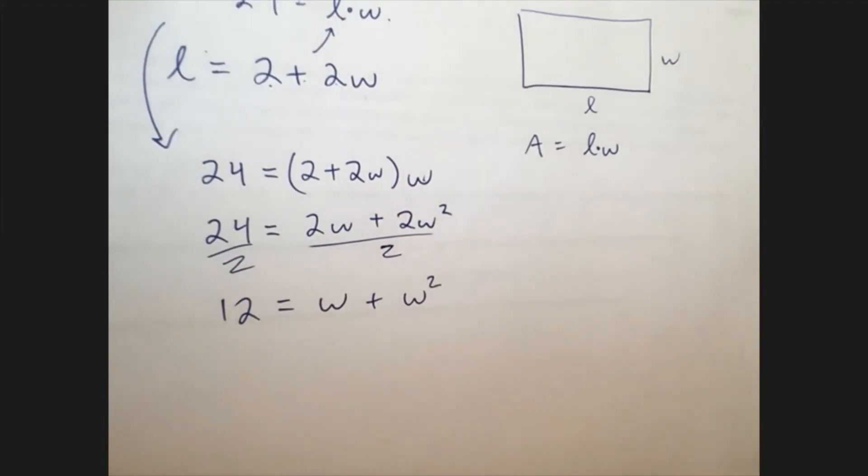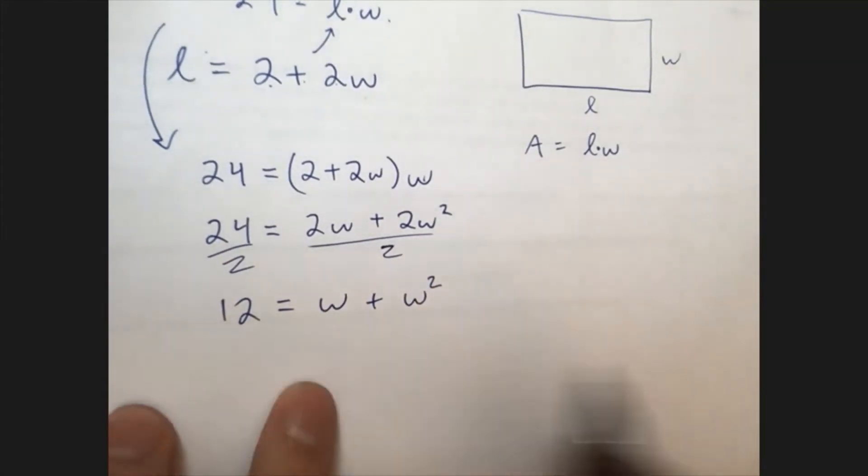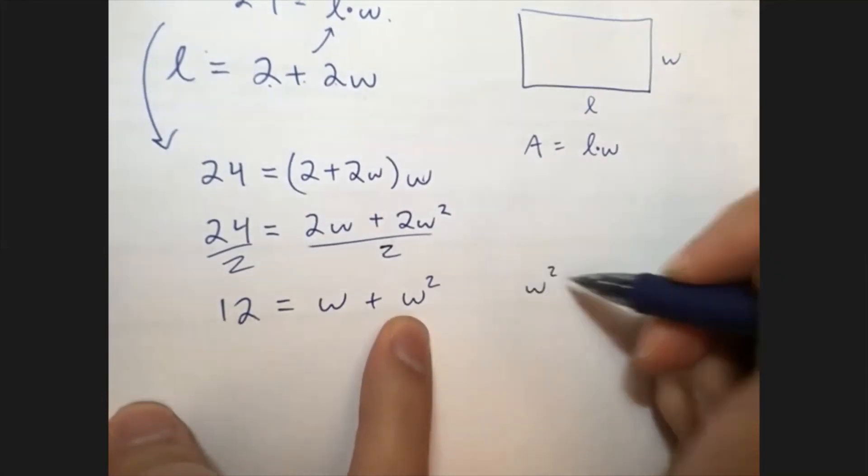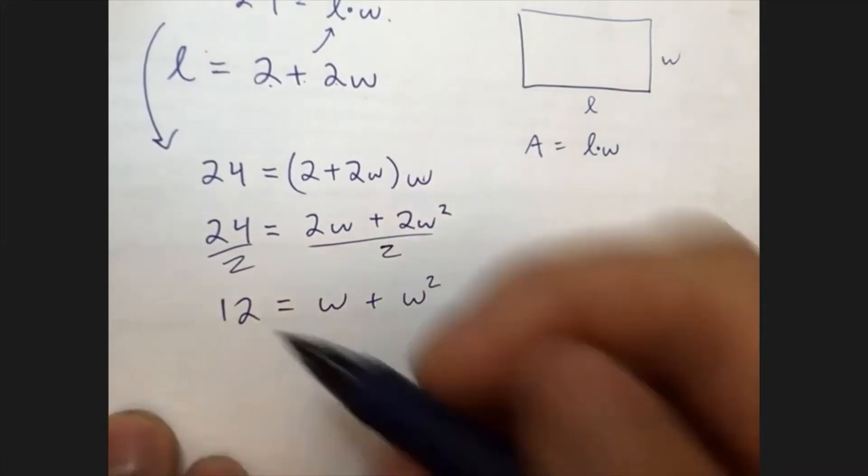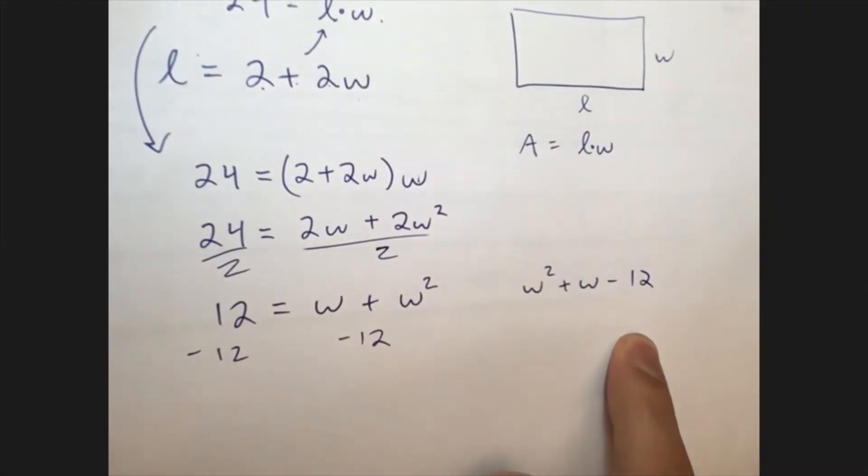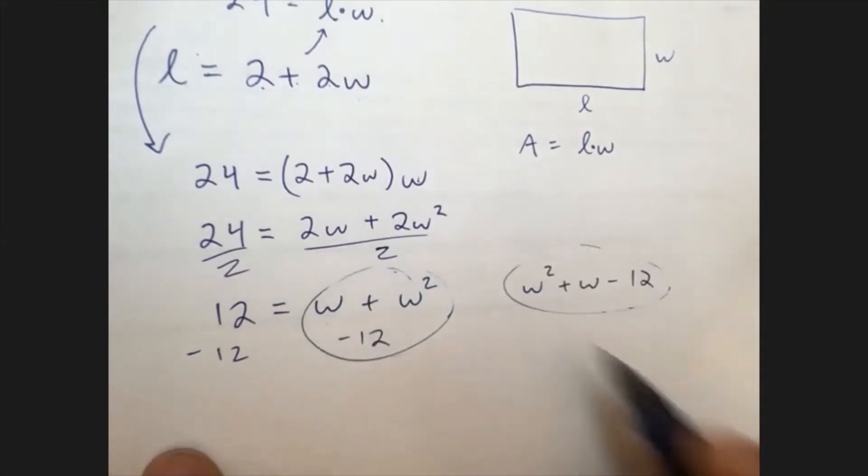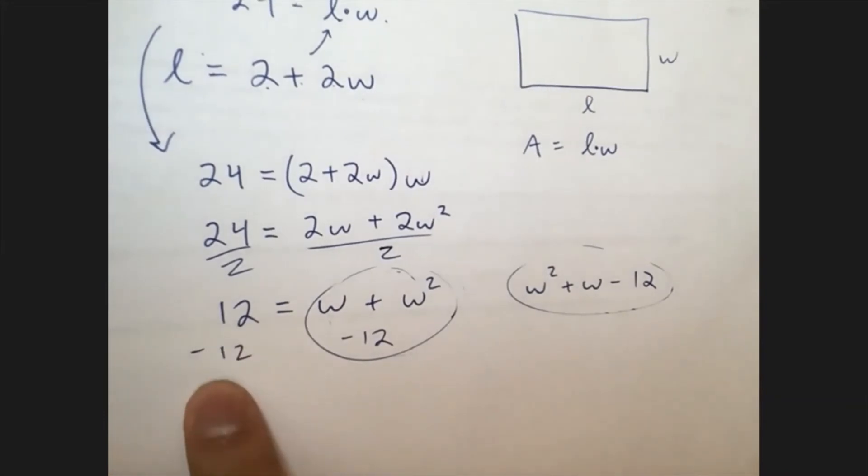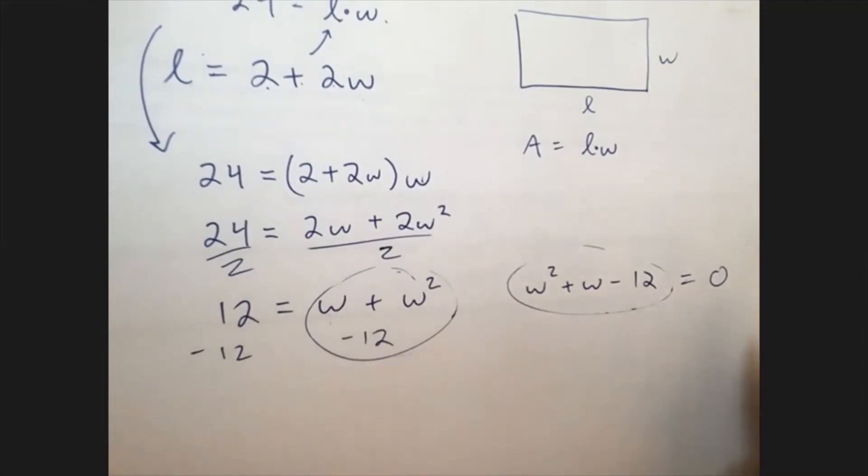And it's a polynomial, so what I want to do is get it equal to 0, right? So I'm going to subtract. Let me write this so that it's W squared plus W instead of W plus W squared, and then I'm going to subtract 12 from both sides. All right. So I'm going to have W squared plus W minus 12. That's what this is. This thing here is just this thing here. And then what does that equal to? Well, 12 minus 12 is 0. So all that's equal to 0. So I've just kind of rewritten this in a different way.